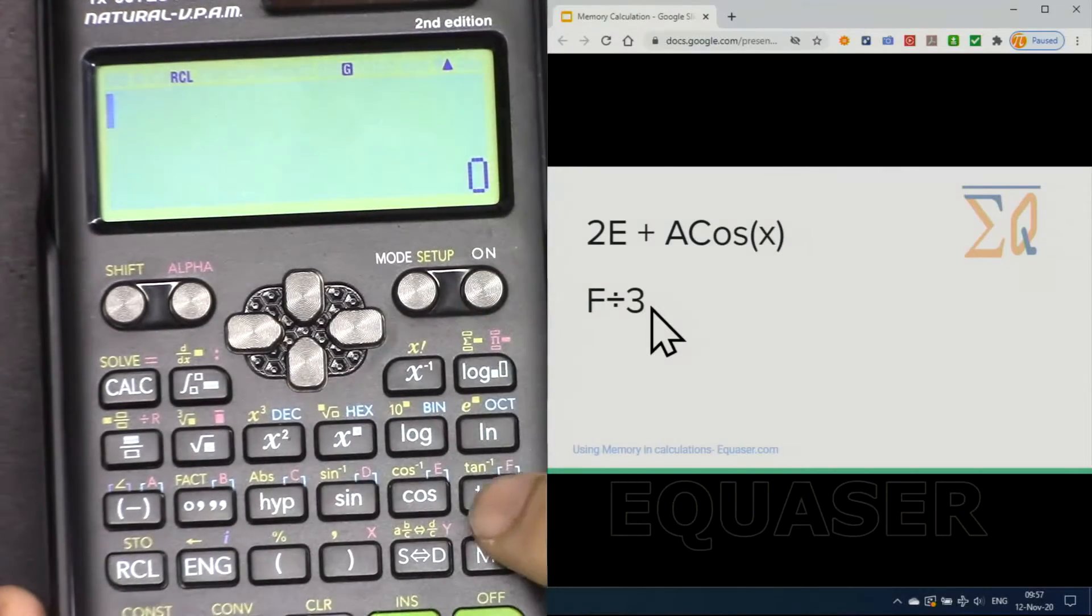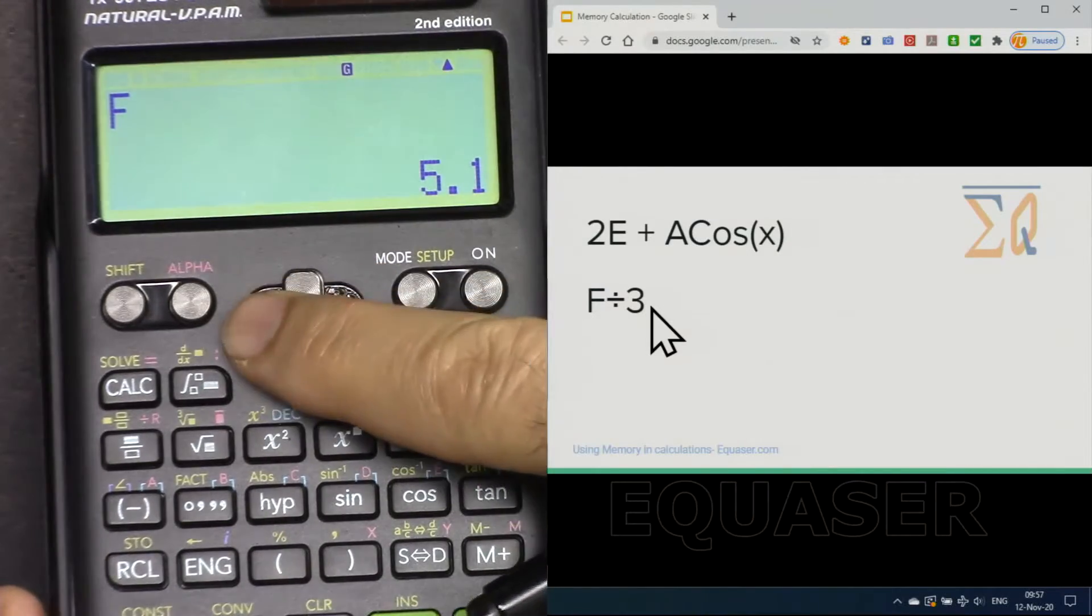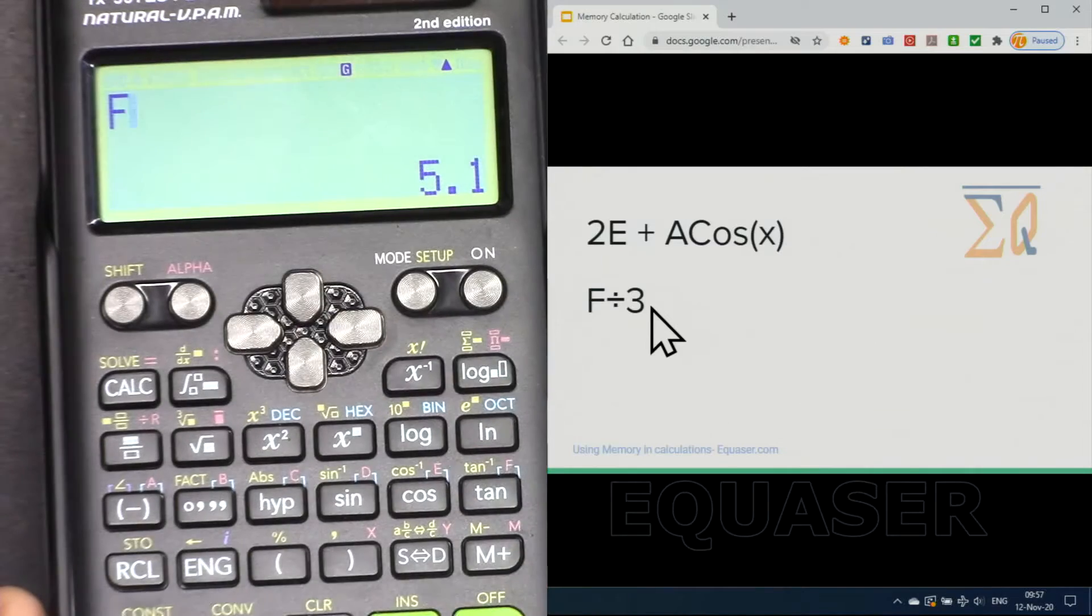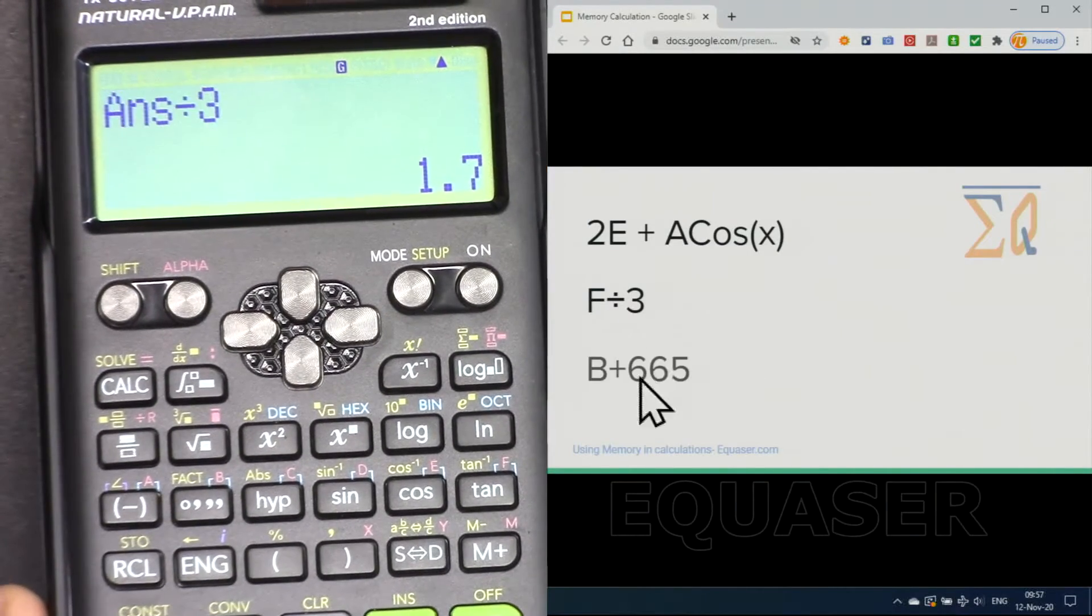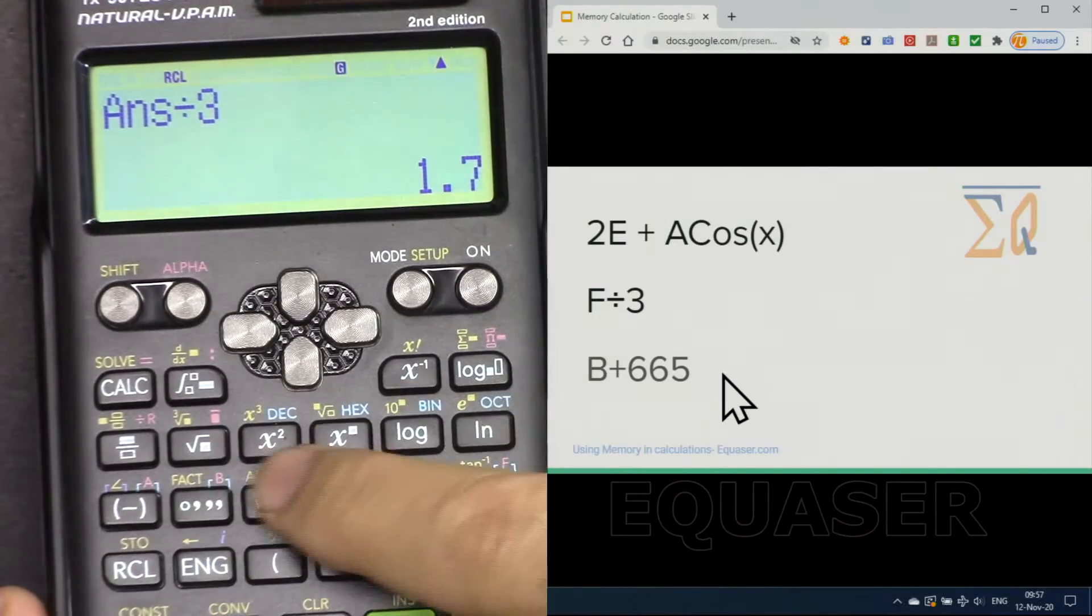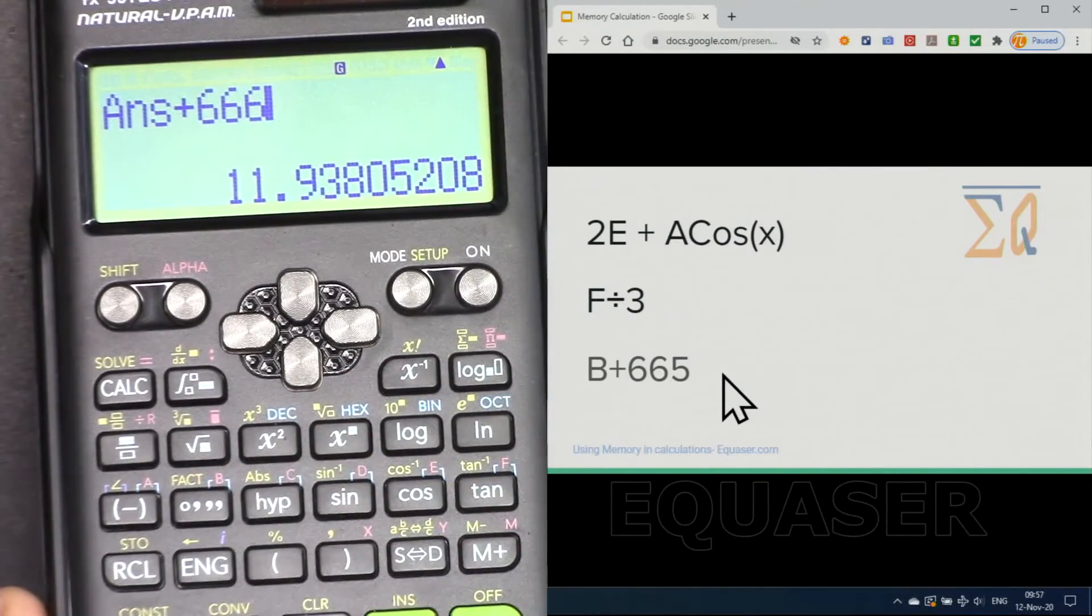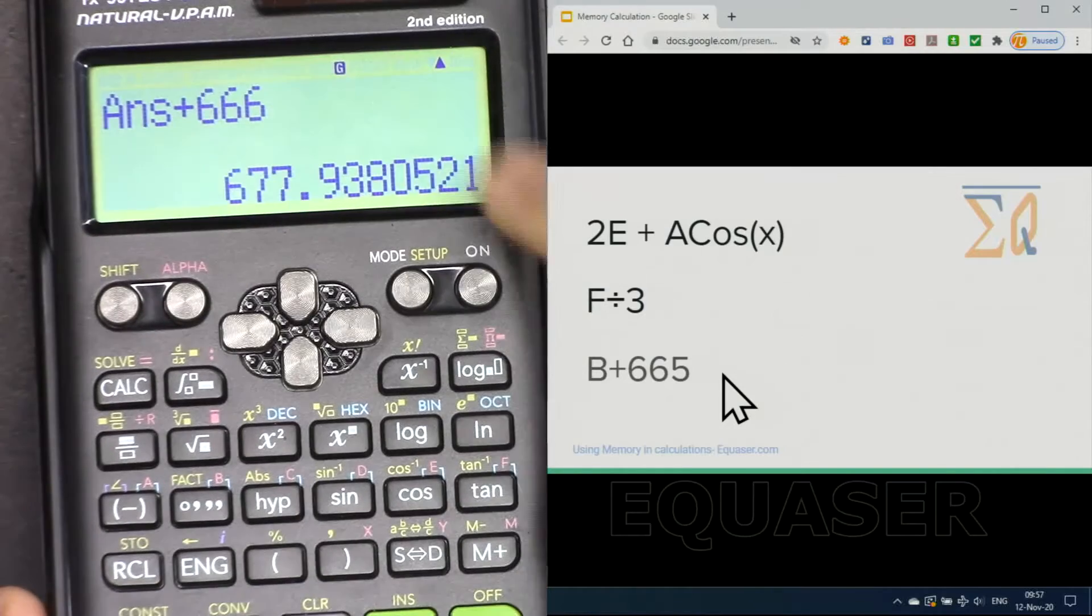Recall F and then go with the arrow to the left and then divide it by 3 and it will be the same answer. B plus 665, recall B plus 665. The same way answer came but do not worry.